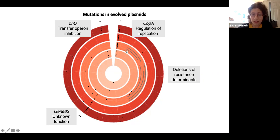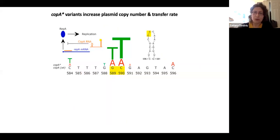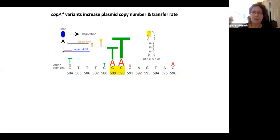Instead, most mutations were clustered in a small region of the CopA gene, which isn't involved in transfer but is involved in the regulation of replication. CopA is a small RNA which hybridizes to the mRNA of the RepA protein. RepA is the initiator of replication and is limiting for plasmid copy number. The mutations we observed were exactly the same as mutations characterized in one loop of the CopA RNA that prevent its binding and inhibition of RepA production.